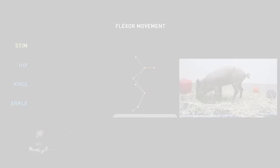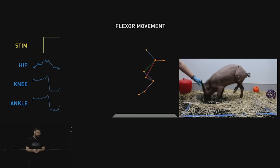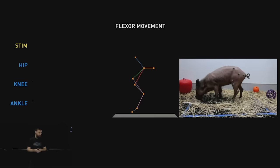So let's stimulate an electrode. So here's one electrode on one thread that, when we stimulate, causes a flexion movement of the leg. So on the left, you can see the movement of the joints. And you can also see the time series of the stimulation pattern in yellow. So the leg is moving up.